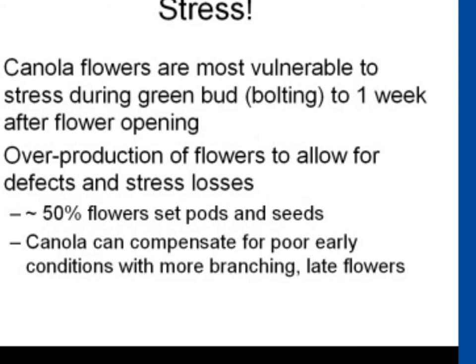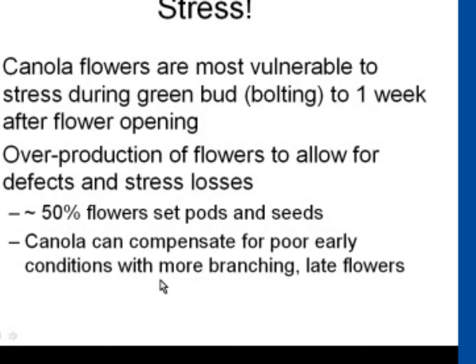When we talk about stress — when are the canola flowers most vulnerable? In summary, it's from the green bud or bolting stage right before it starts to bolt, to one week after flower opening. However, canola has a great overproduction of flowers that allows it to overcome defects and stress losses. Only about half the flowers in canola will set pods and seeds, so we have almost double capacity in canola. That's why it can compensate so well for poor early conditions with more branches and late flowers.